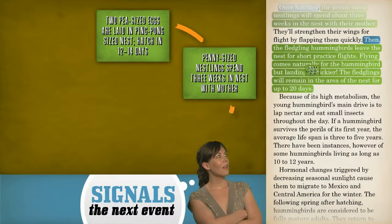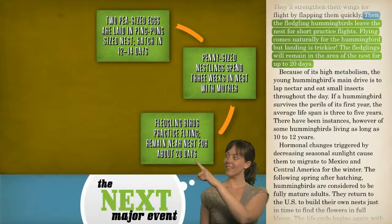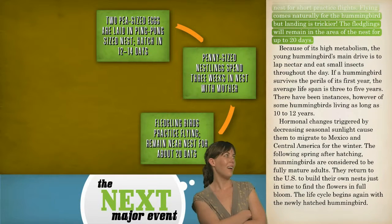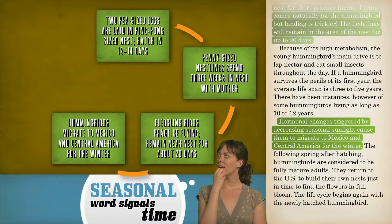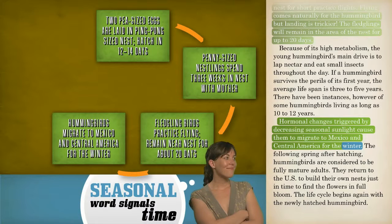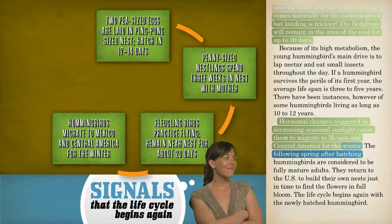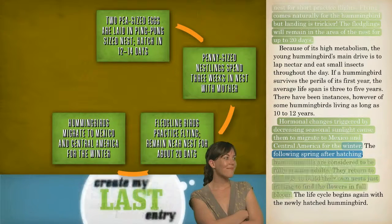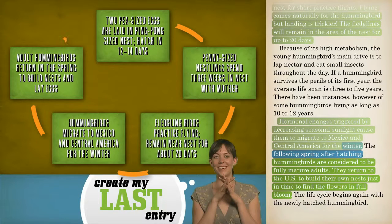Then, the fledgling hummingbirds practice their flying, remaining near the nest for the next 20 days. The next major event in the life cycle of the hummingbird is its migration to Mexico in winter. I know that when an author uses a seasonal word such as 'winter,' it provides me with information about when an event happens. From the signal words 'following spring after hatching,' I understand when the adult hummingbirds return to build their own nests, the life cycle begins again with the newly hatched hummingbird.